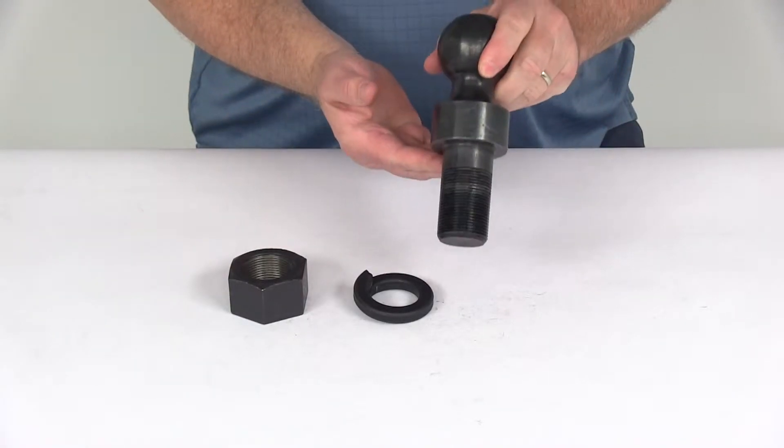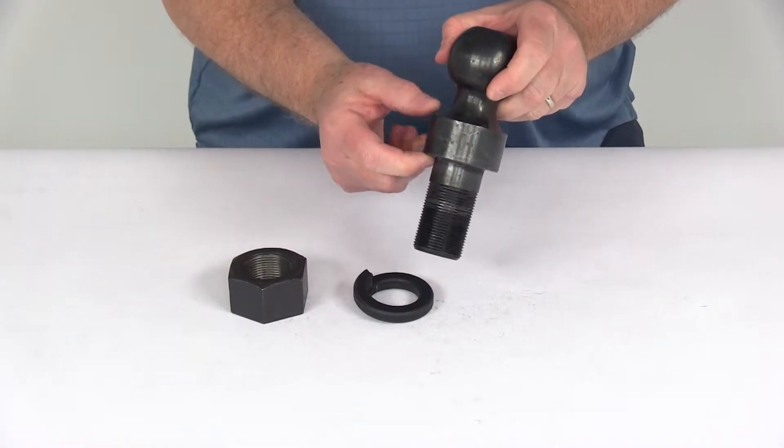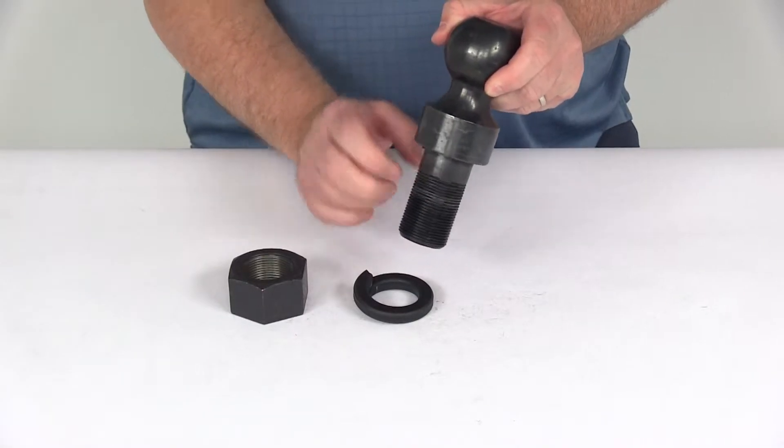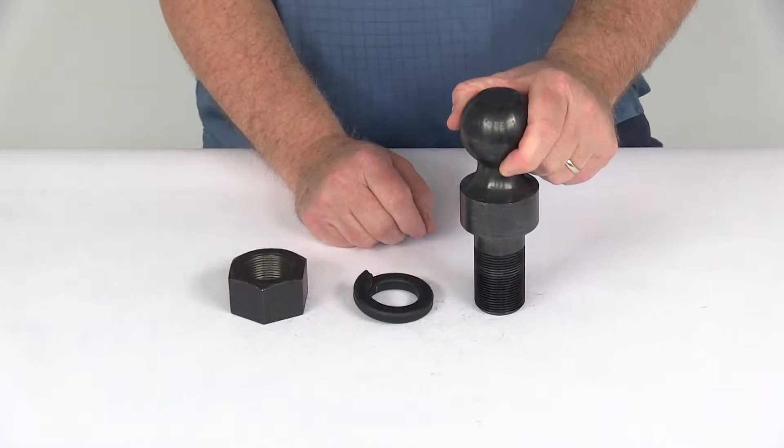Today we're going to take a look at the B&W 2-5-16 hitch ball with the 1-inch rise and long shank. It's a raw finish and has a 30,000 pound weight capacity.